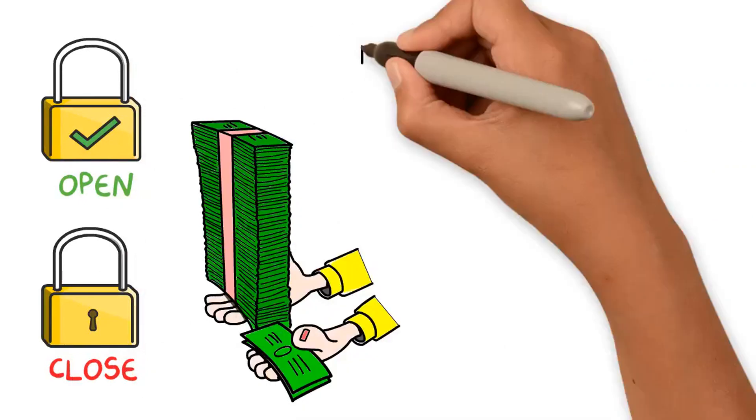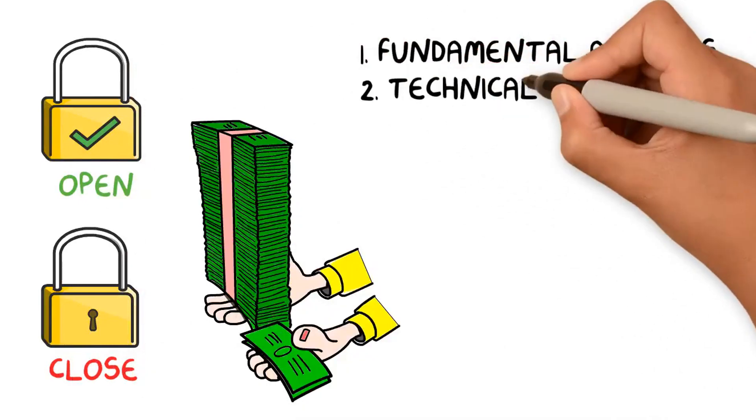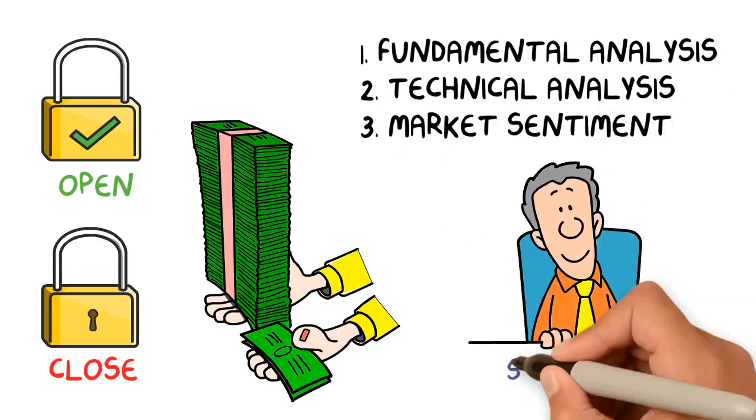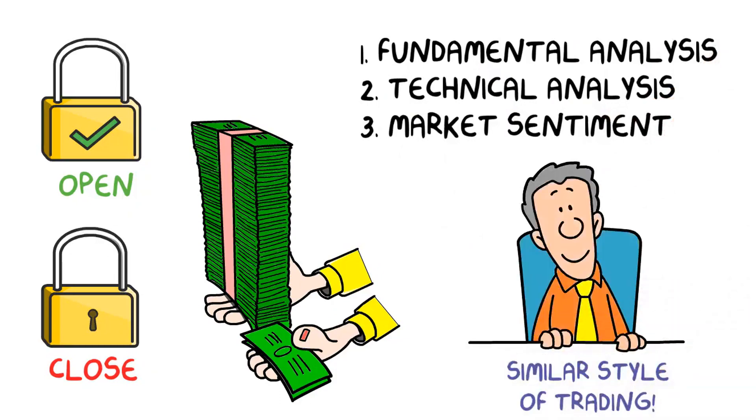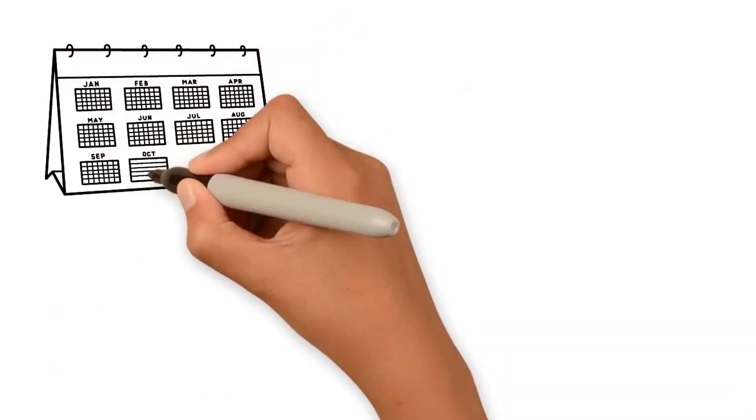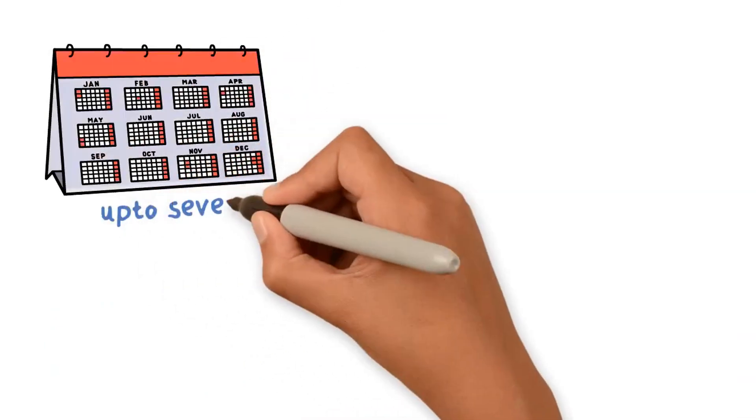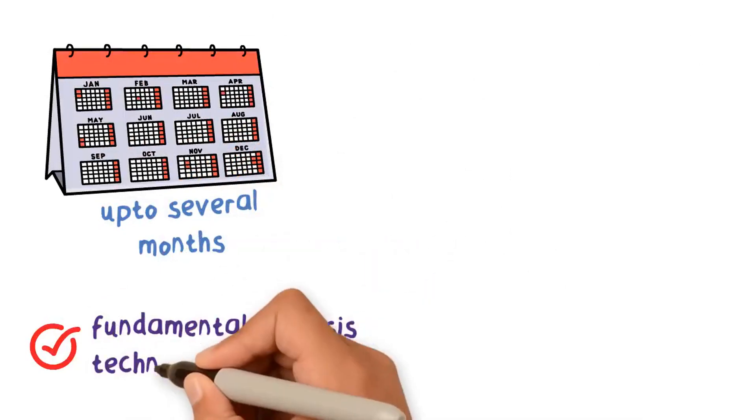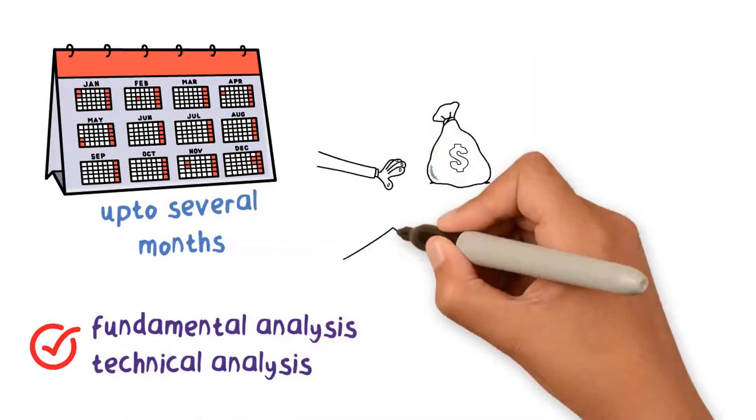Swing traders and day traders have a similar style of trading, but the main difference between them is that swing traders hold positions of trades that last a couple of days up to several months. Swing traders primarily use fundamental analysis and technical analysis to look for trading opportunities to buy or sell stocks.